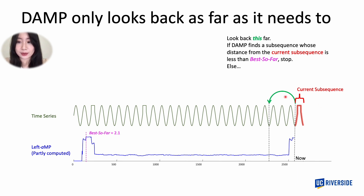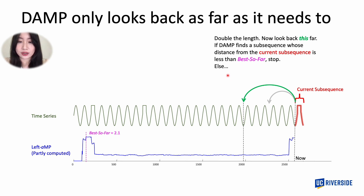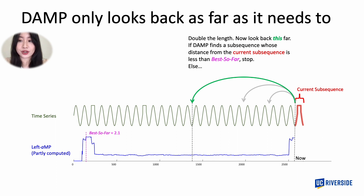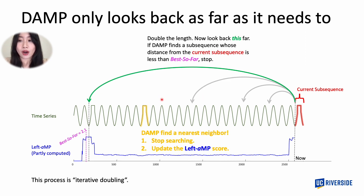In our example, the current subsequence is a square wave. We cannot find a similar subsequence in this segment of sine waves, so we enter the else case and double the length of the backward search. We repeat this process — all subsequences in the new range are still sine waves, not similar to the square wave, so we double again. We continue doubling until finally, in a wider range, the algorithm finds a square wave similar to the current subsequence. At that point, the backward search completes and can be terminated. We refer to this process as iterative doubling.